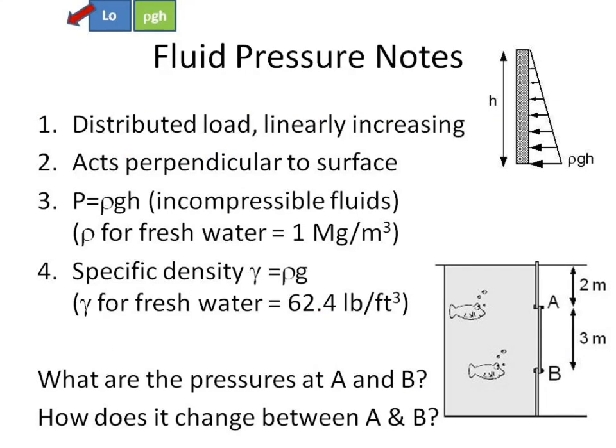Fluid pressure is a distributed load. Look, here's your load intensity diagram. What you need to remember is that this height right here, the bottom of that triangle is given by rho GH. So that's your formula you've got to know. It's a distributed load that's linearly increasing. So as you go down, you know that from here to here, this is a connect the dots kind of line. It acts perpendicular to the surface, even if you have a surface that's not straight up and down.